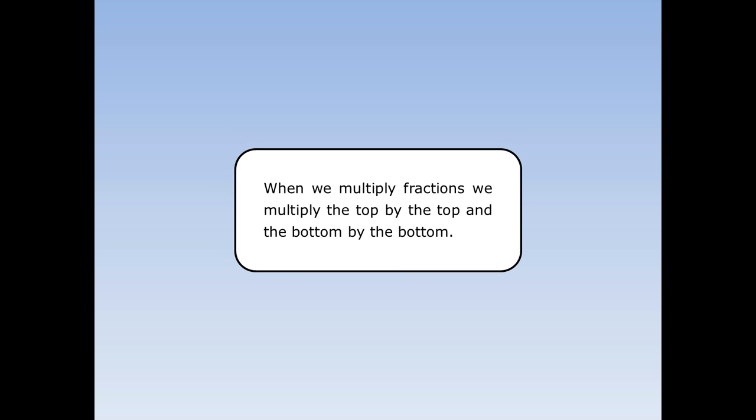When we multiply fractions, we multiply the top by the top and the bottom by the bottom. If we can find a number that divides into the top and the bottom, then we can cancel.